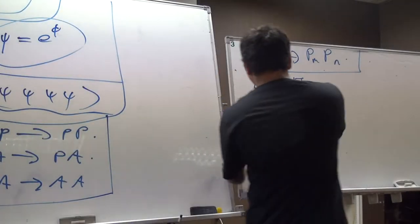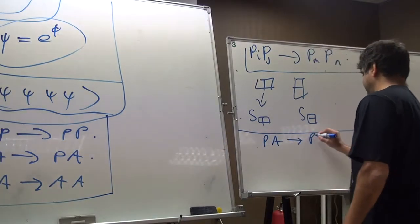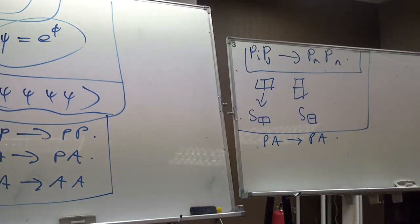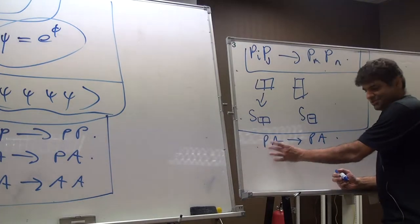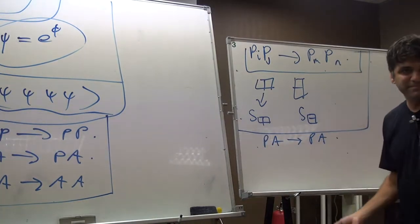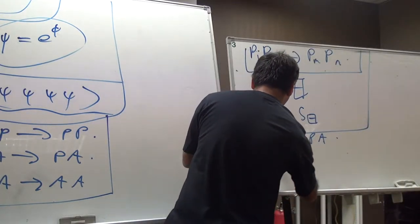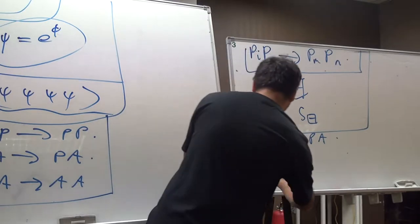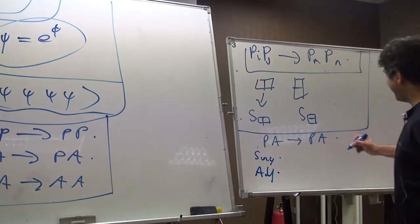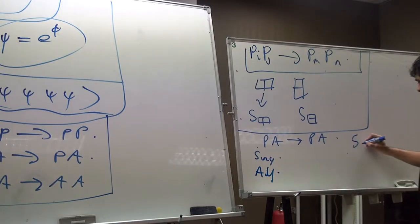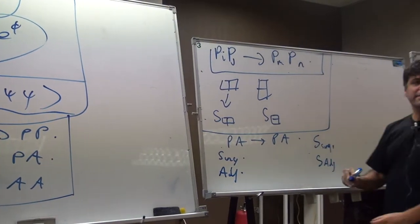For particle-antiparticle scattering, once again I'll couple these fields. Here there are also two representations: the singlet and the adjoint. So in the particle-antiparticle sector I have S-singlet and S-adjoint to discover. The fact that we have two here and two there was not a coincidence, because in each case what we're trying to do is take phi phi-bar phi phi-bar and couple the singlets.